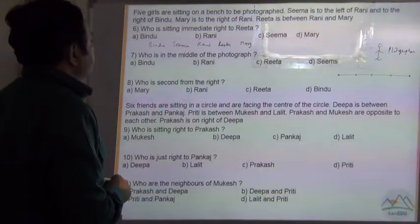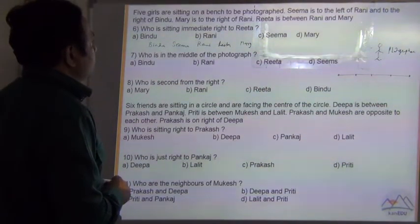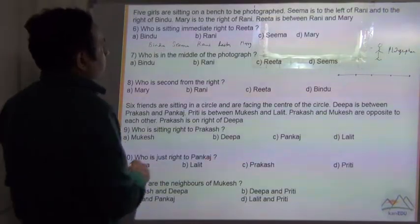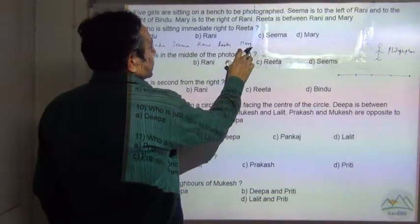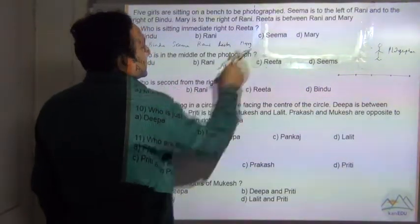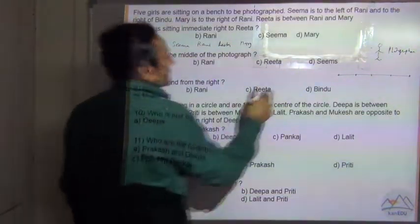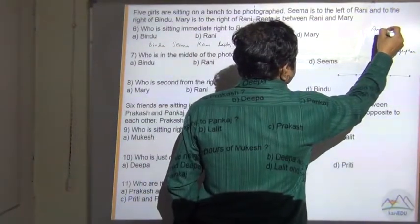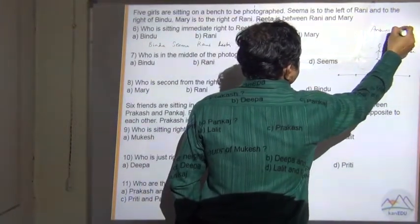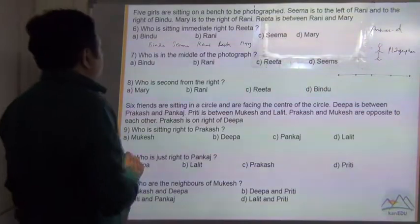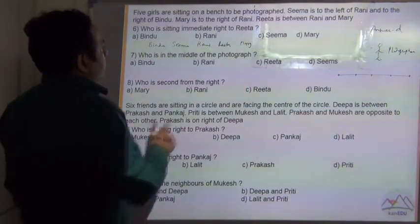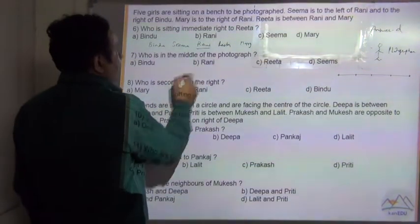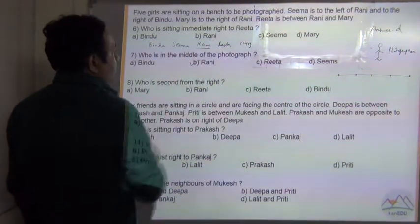Who is sitting immediately to the right of Rita? Mary is immediately right of Rita, so the answer is B. Who is in the middle of the photograph? Rani is in the middle, so the answer is B.